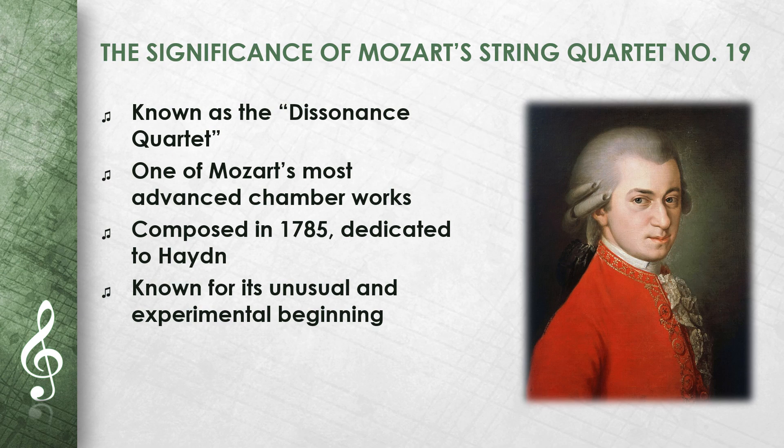Composed in 1785, this quartet is one of a group of six quartets that Mozart dedicated to Joseph Haydn, a composer whom he greatly admired and from whom he drew much inspiration. The Dissonance Quartet is particularly known for its unusual and experimental beginning, which gave it its nickname.